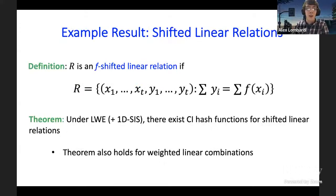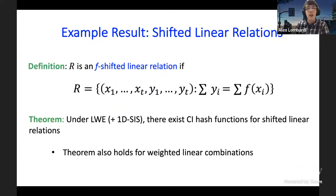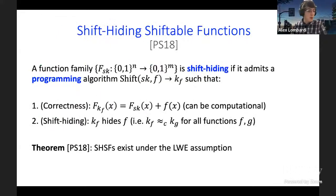An example result: consider shifted linear relations parameterized by a function f, where the relation is satisfied by t inputs and outputs when the yi's sum to the sum of f(xi) over all i. We can build correlation tractable hash functions for this relation — it is hard to find t inputs whose corresponding hash outputs add up to the sum of f(xi). This extends to weighted linear combinations.